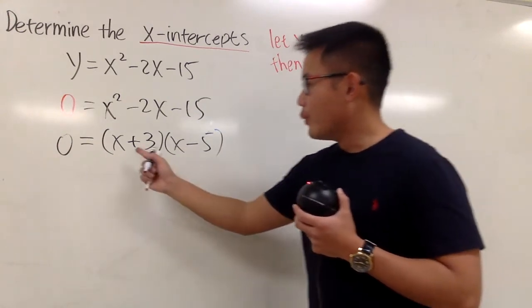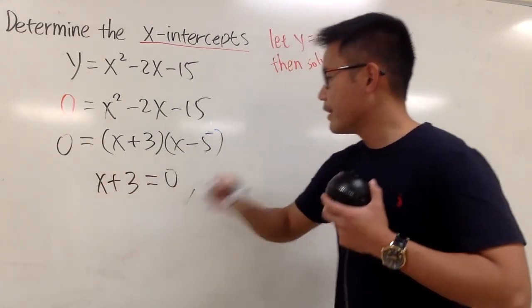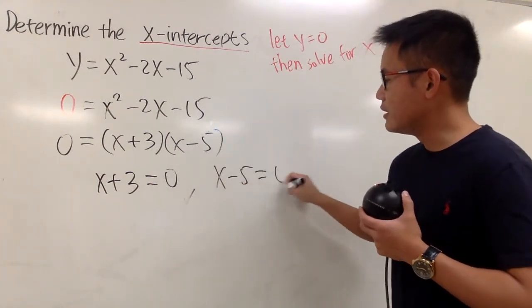And we have to continue. We will make the first factor, x plus 3, to be 0. And we also make the second factor, x minus 5, to be 0.